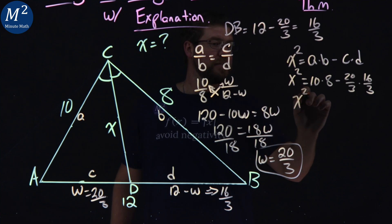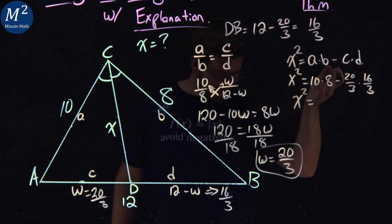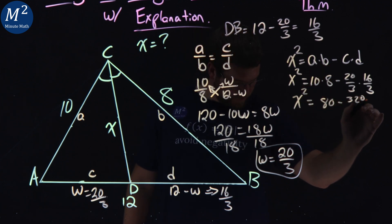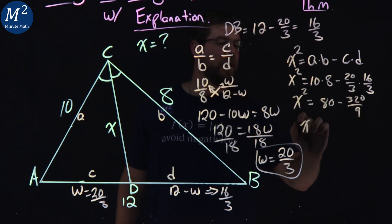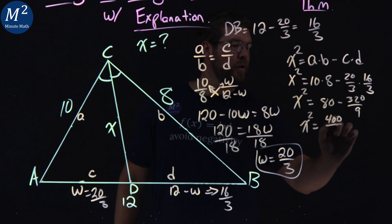From all that, that simplifies to x squared equals 80 minus this number here. I did it all for you, 80 here minus 320 over 9. Look at my notes here. But x squared minus one fraction is 400 over 9.